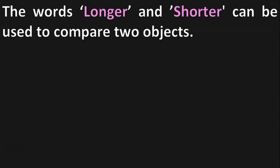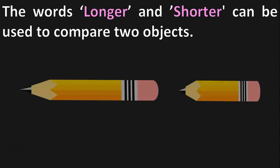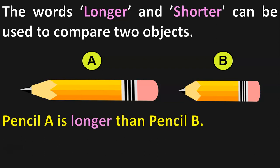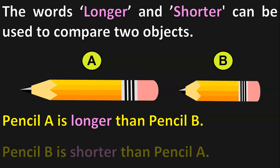Pencil A is long and Pencil B is short. The words longer and shorter can be used to compare two objects. Let us take the example of the same pencils. We have Pencil A and Pencil B. Which pencil is longer? Yes, Pencil A is longer than Pencil B. Then, Pencil B is shorter than Pencil A.